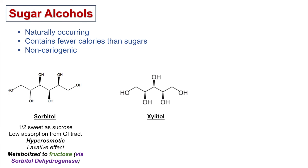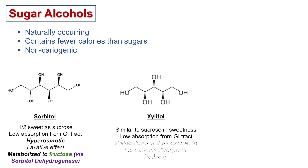Another sugar alcohol commonly seen is xylitol. Xylitol is similar to sucrose in its sweetness and has low absorption from the GI tract like sorbitol. It is metabolized and processed in the pentose phosphate pathway.